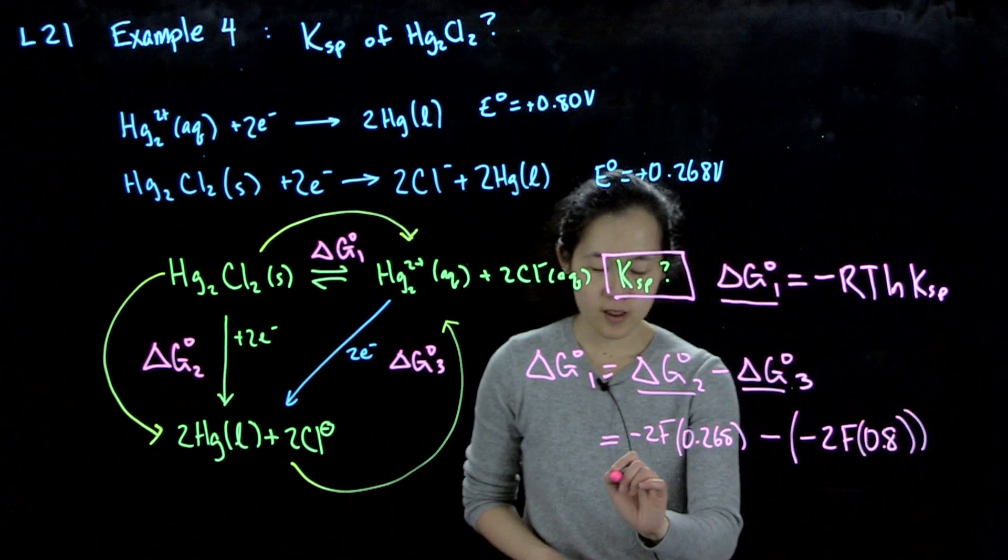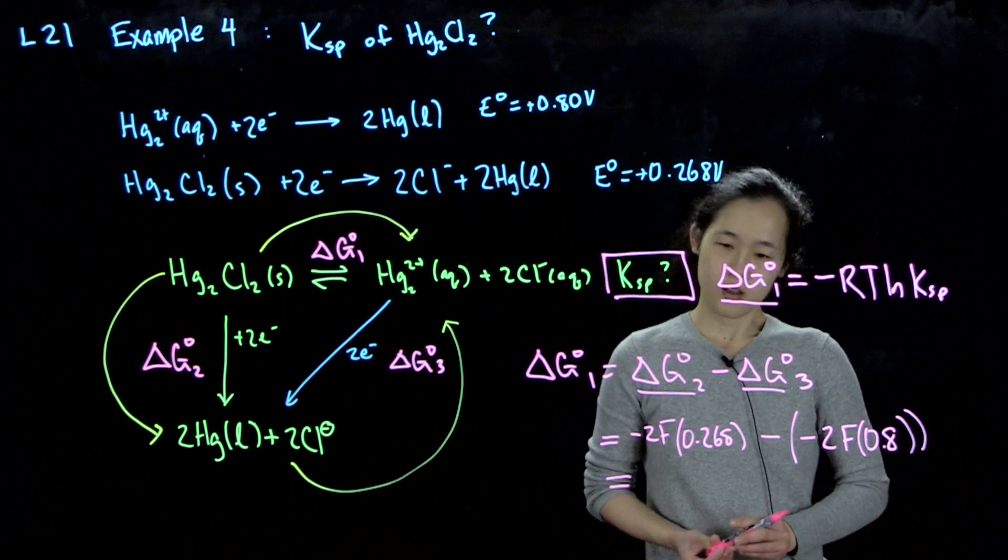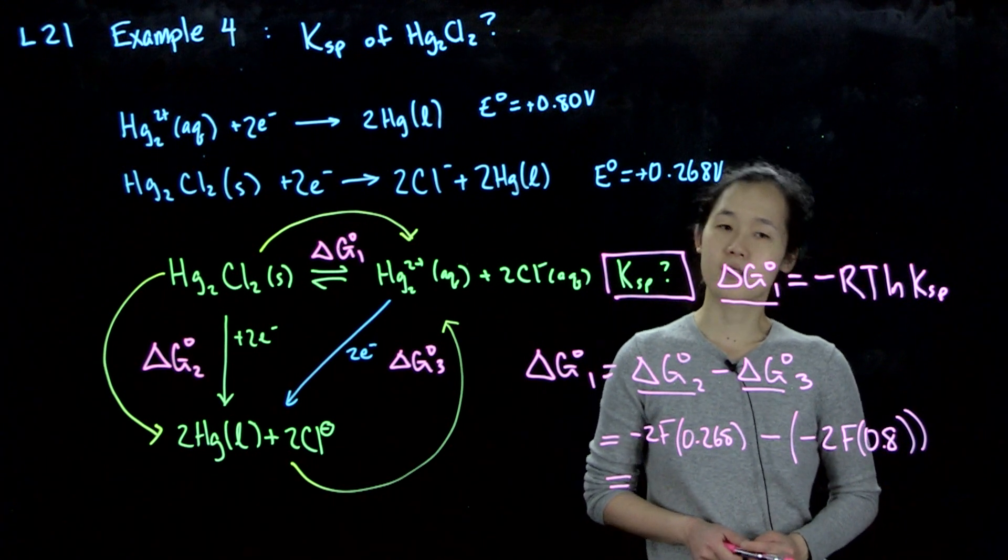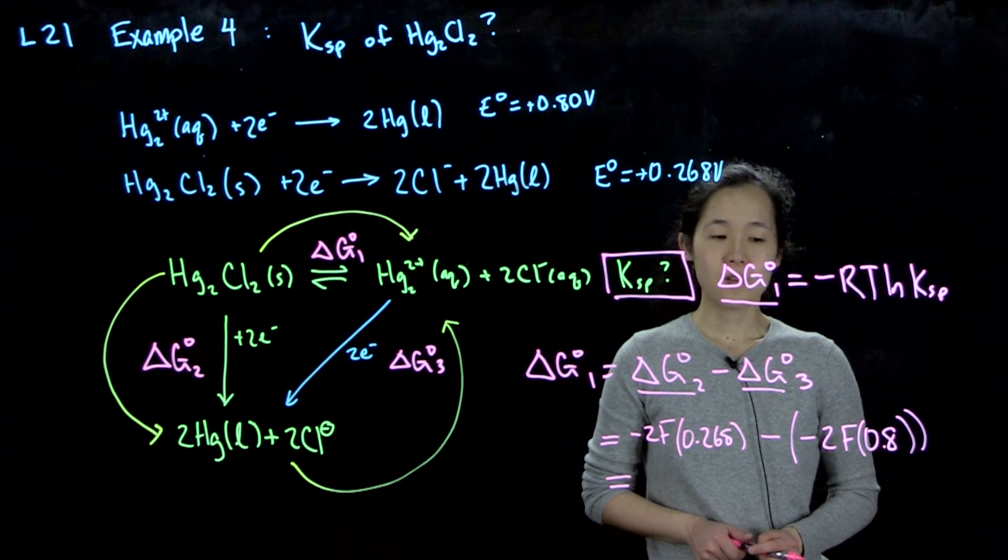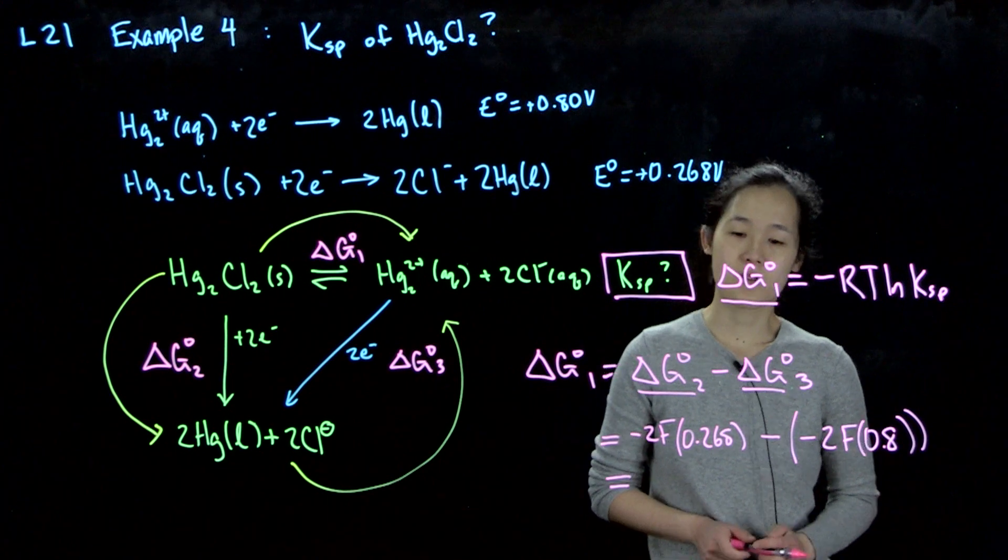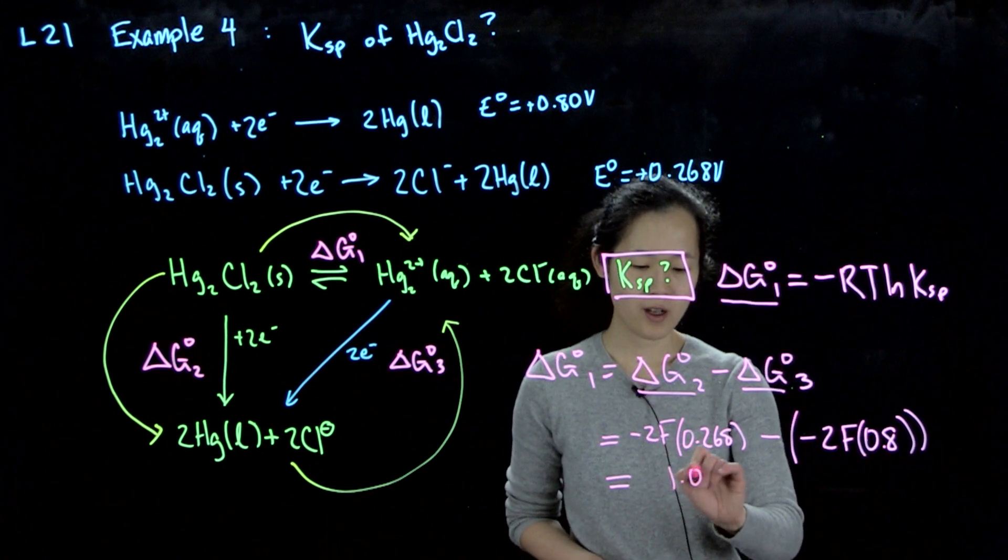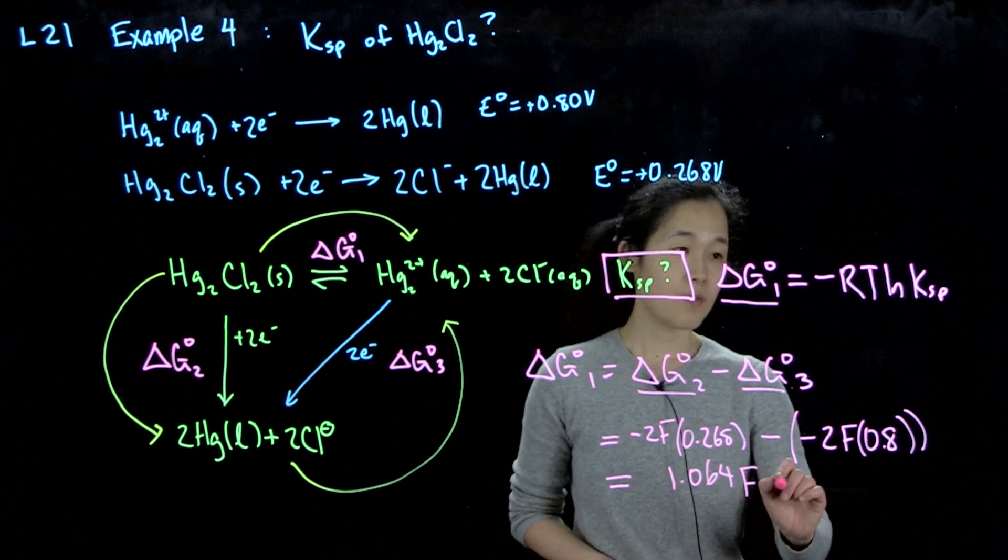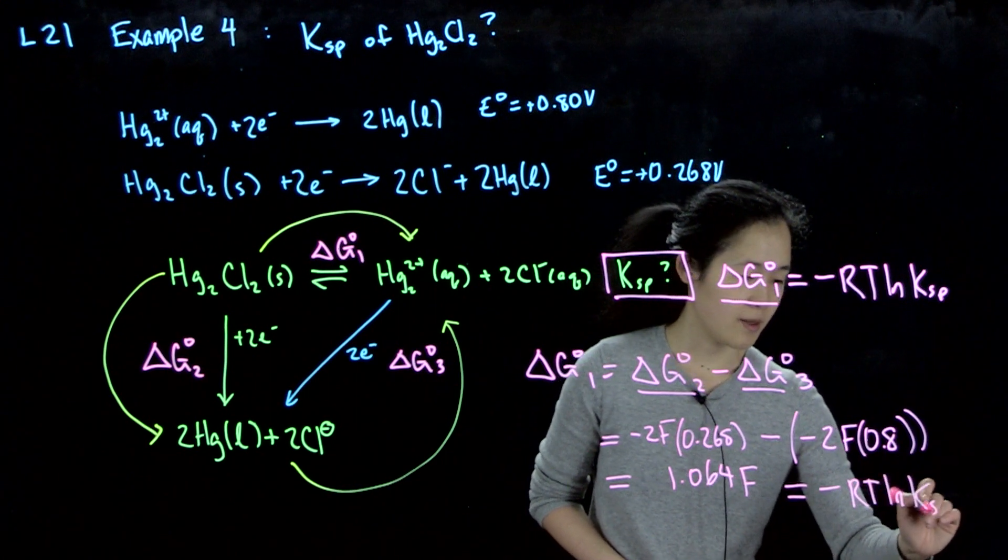And then so overall, this should give us, if I can do the math, it should be 0.8 minus 0.268, which is 0.532 times 2 is 1.064. So I think this is about 1.064F. And then this should be equal to negative RT log Ksp.